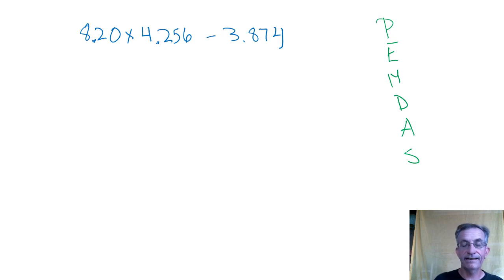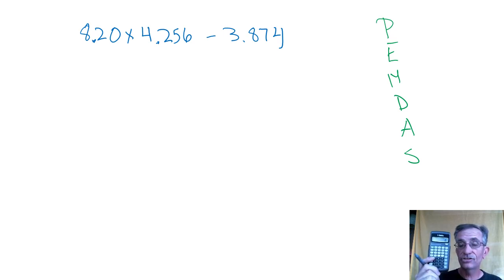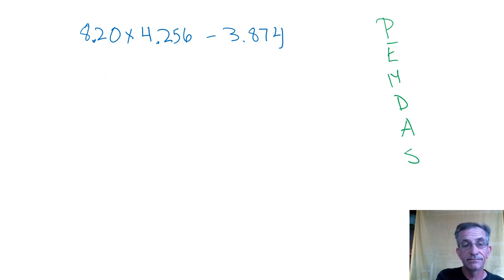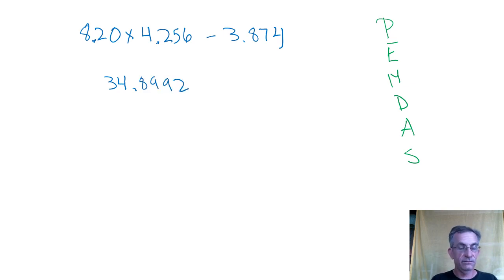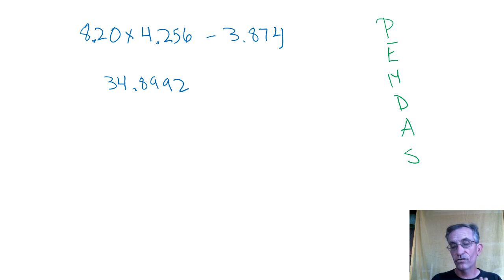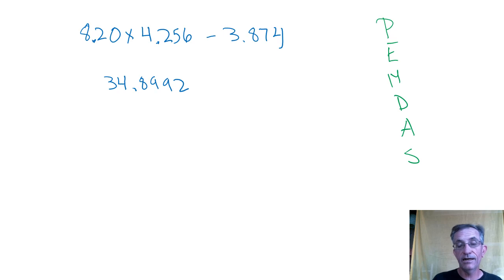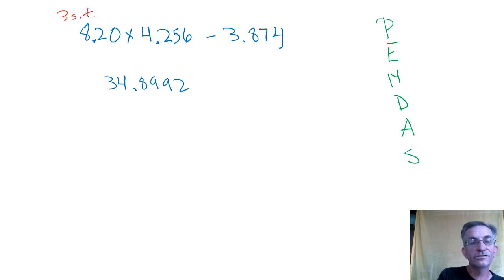So I multiply the first two numbers together on my calculator. 8.20 times 4.256 — and I write down every digit my calculator gives me. Now let's talk about the rounding for this answer. We're multiplying, so we go by sig figs. 8.20 has three sig figs — wait, that trailing zero counts — so three sig figs. 4.256 has four sig figs — they all count. So I would round after the third sig fig. I'm not going to actually round; I'm just going to underline what I would keep: three sig figs.